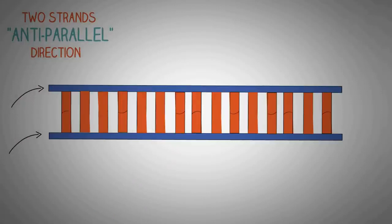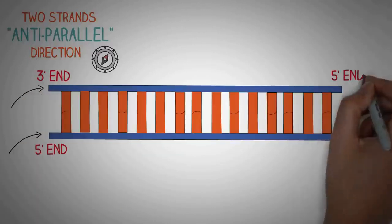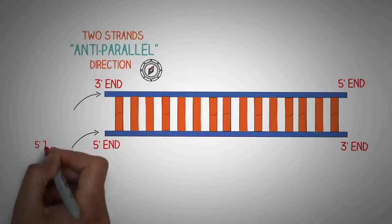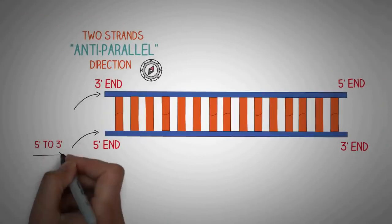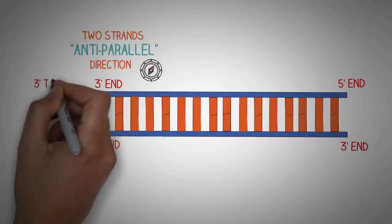The strands also have a direction. In DNA we don't have north, south, east or west, but DNA strands have two ends: a 5' end and a 3' end. Since the upper strand runs in the completely opposite direction to the lower strand, it has its 3' end on one side and its 5' end on the other. So the strand below runs from the 5' to 3' direction and the strand above runs from the 3' to 5' direction.